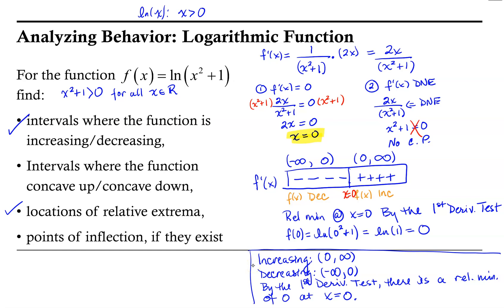Now let's go ahead and move on and start considering the concavity of the function and whether there are any points of inflection. As we do this, we will need the second derivative of the function, and so we will find the second derivative based on what we found for the first derivative.